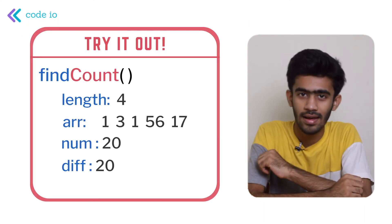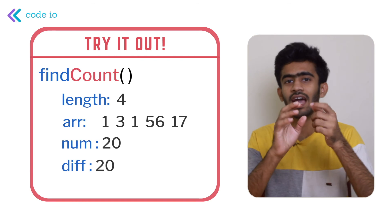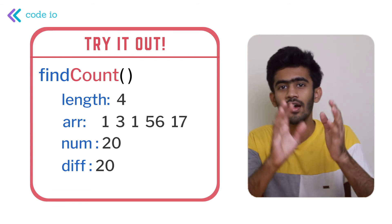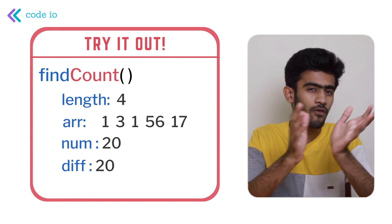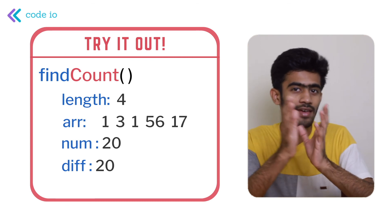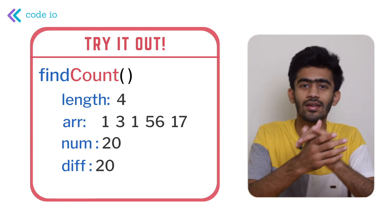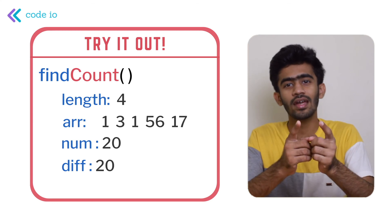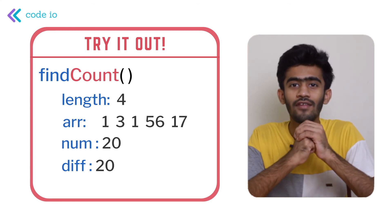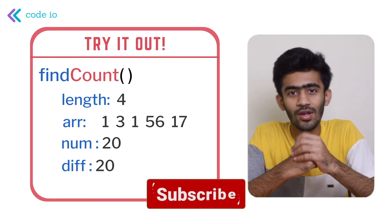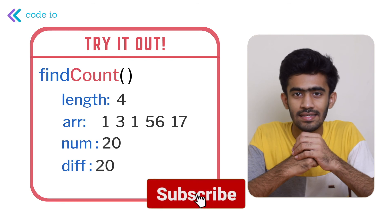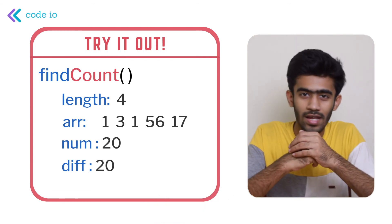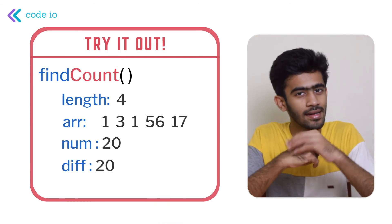We are now in the try-it-out section. We have four arguments: length, array, num, and difference. For these sample inputs, what would the output be if we pass them to the findCountOf function we just completed? Let me know your answers in the comment section below. If you love this video, please drop a like and comment if you have any questions. Don't forget to click the subscribe button. We'll see you in the next episode. Bye bye.